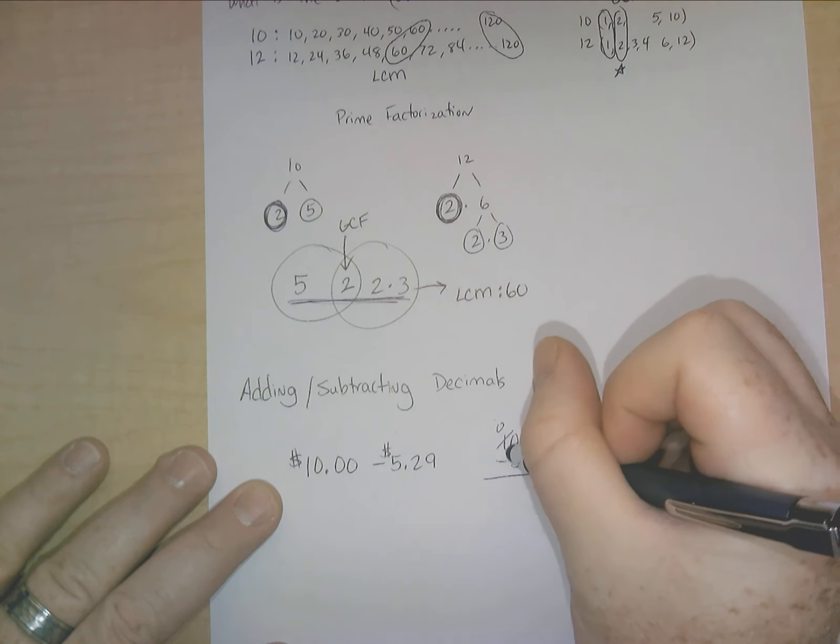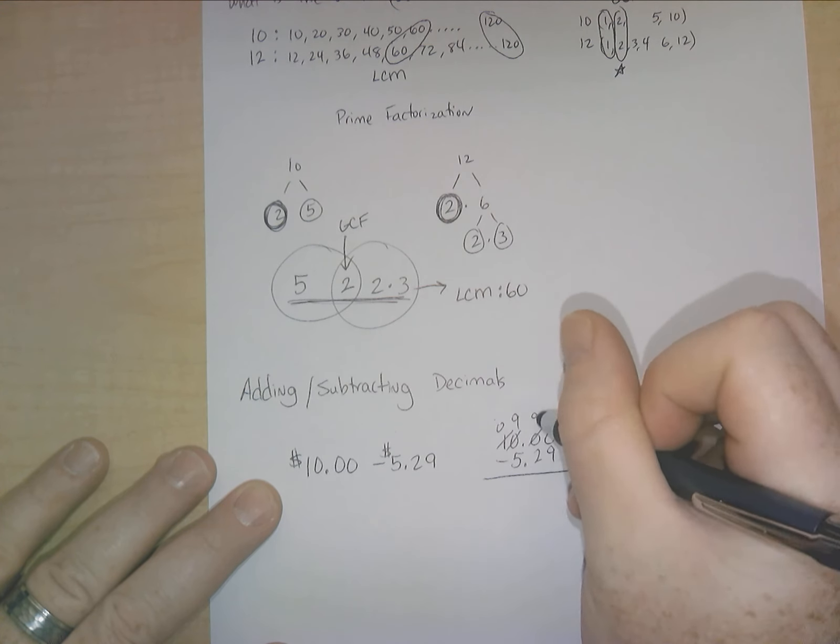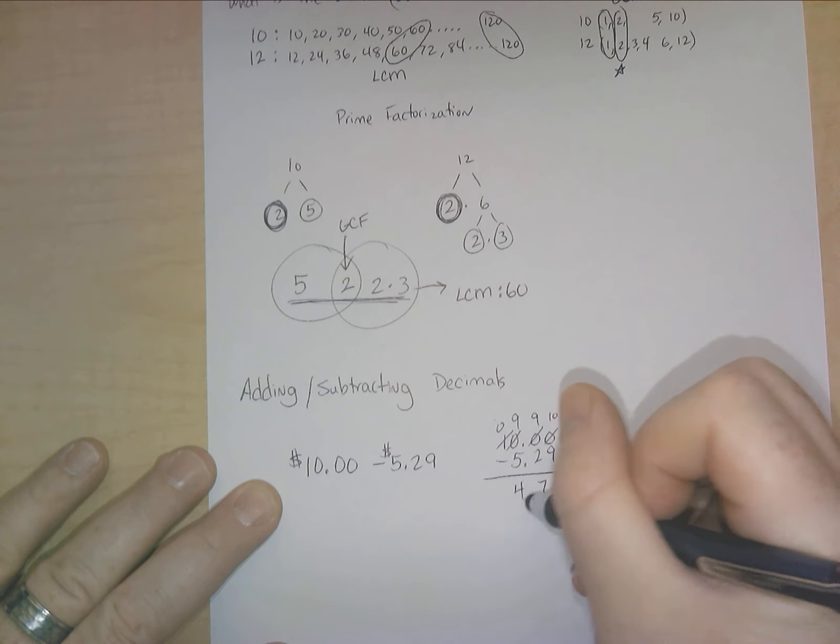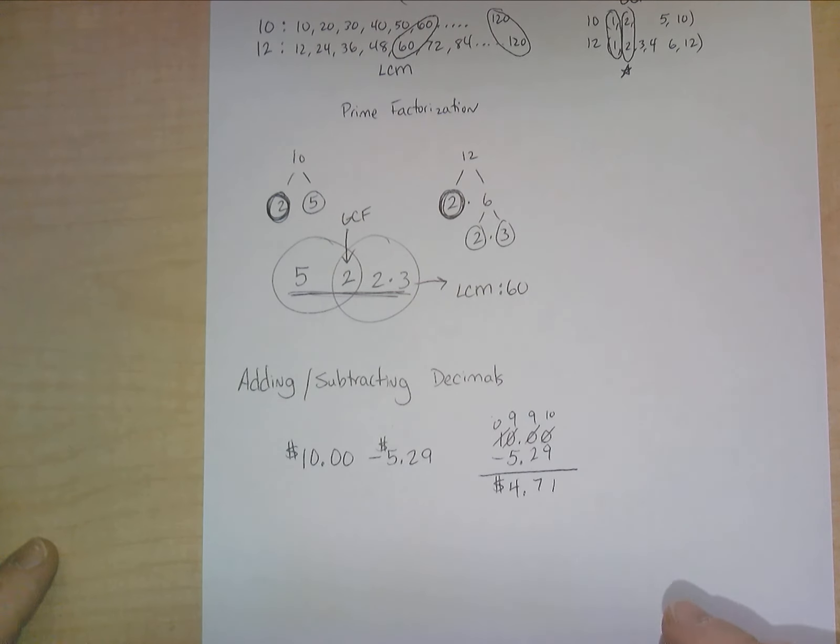We subtract 5.29. You see the decimal lines up right here. The 2 9 goes underneath the two 0s. And then you just borrow. Make this a 0. This becomes a 9. This becomes a 9. This becomes a 10. You subtract. You get $4.71 left over. That's a typical decimal problem, especially with subtraction.